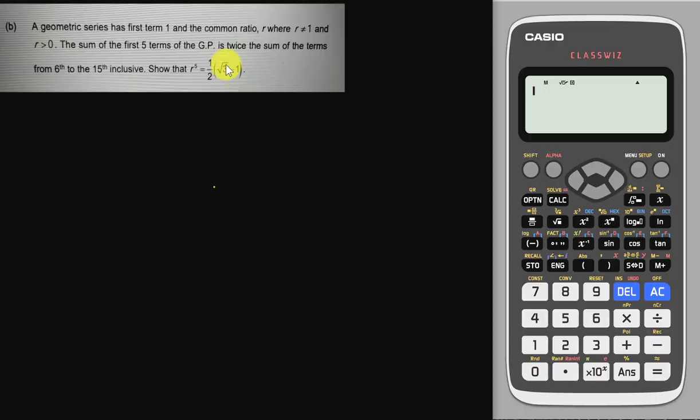This is one of the engineering diploma students actually asked me about this question since it's still a progression question. I'm going to make a short video to explain about how to get this r^5 thing. So at first they say this is GP. They give us the first term is 1 and the common ratio they don't give us, they just say it's r. And then here they have two conditions for r, which is r cannot equal to 1 and r must be bigger than 0.